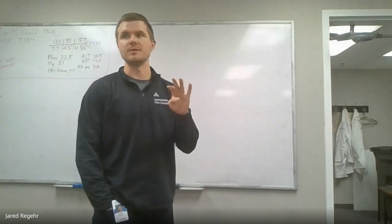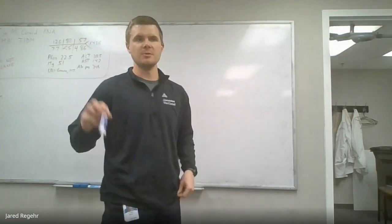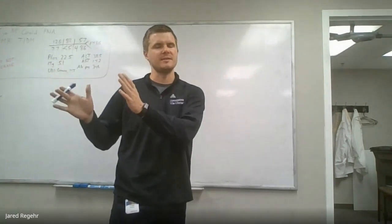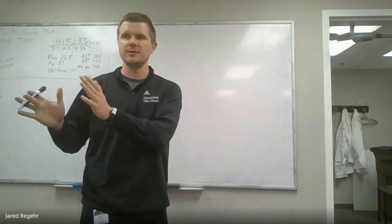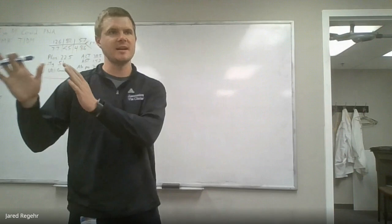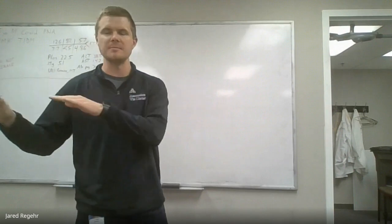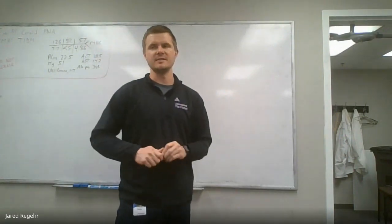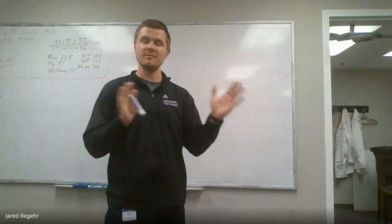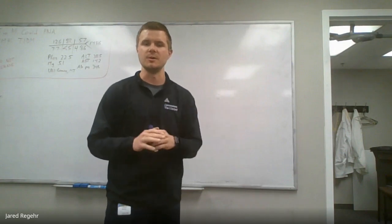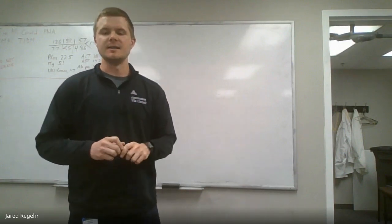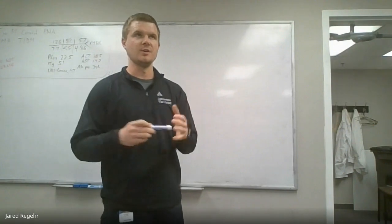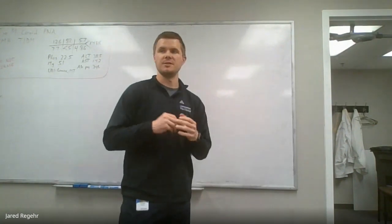No variables and no late decelerations. So: baseline 110 to 160, moderate variability, could have earlies, could have accelerations, but no variables and no lates — that's category one. Category three — think of it as really bad: sinusoidal or absent variability with a few other things. Then basically everything in between is category two.